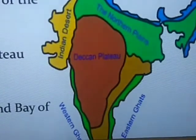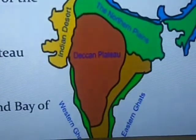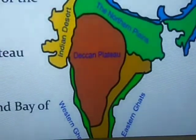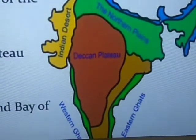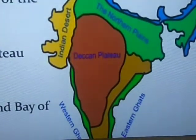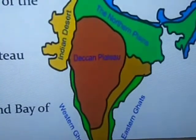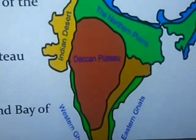Peninsular means a piece of land surrounded by water on three sides. So peninsula means three sides by water and one side by land. This region is surrounded by three seas: the Arabian Sea, the Indian Ocean, and the Bay of Bengal. Below the Tropic of Cancer, this is called the Peninsular Plateau or Deccan Plateau.